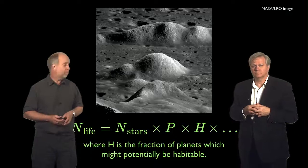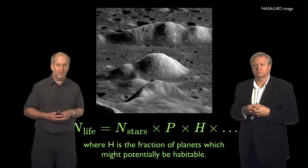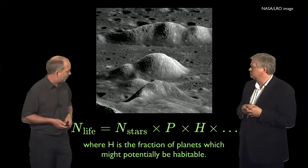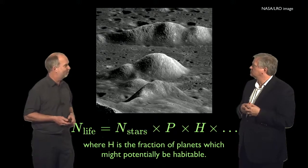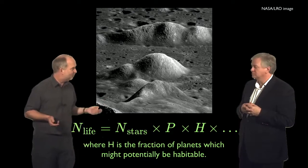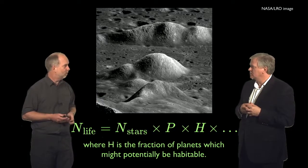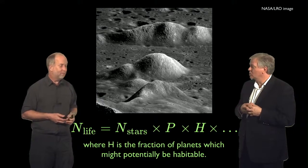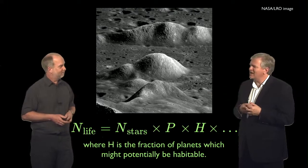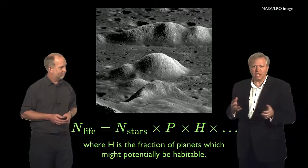But of course, most planets in our own solar system are not very nice places for life. Look at the Moon, for example. I don't think I want to live there. Hard radiation, baking heat and freezing cold, no atmosphere, no water. It's hard to imagine life going on the Moon or Mercury or Pluto or most of the planets, really.